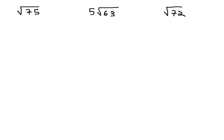In this video, we're going to take a look at how we can simplify radicals that don't have a perfect square root under them. For example, with the square root of 75, we can't just take the square root of 75 nice and even.